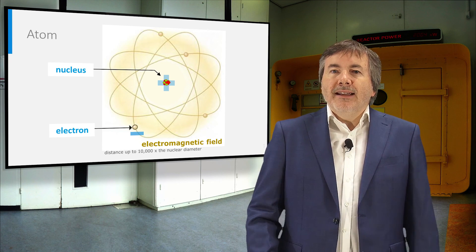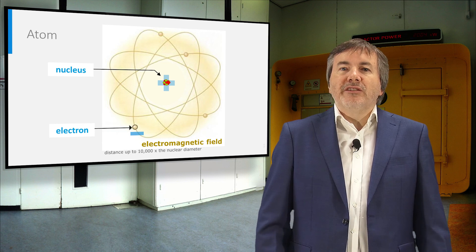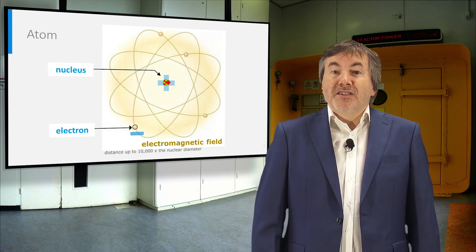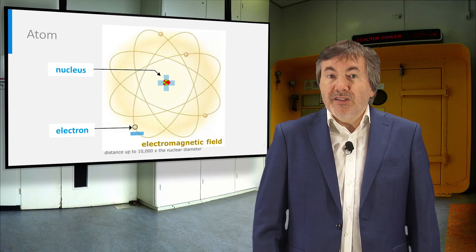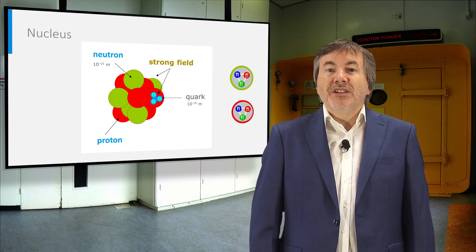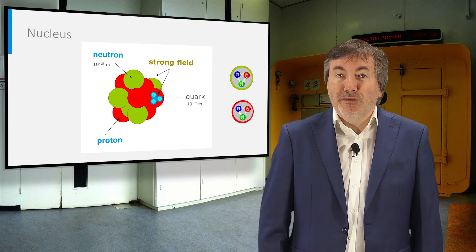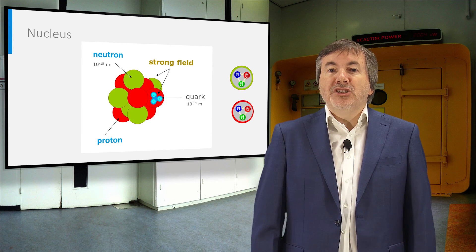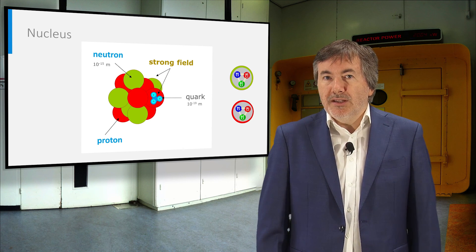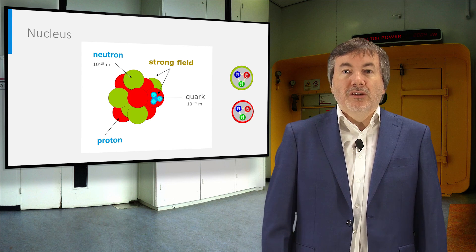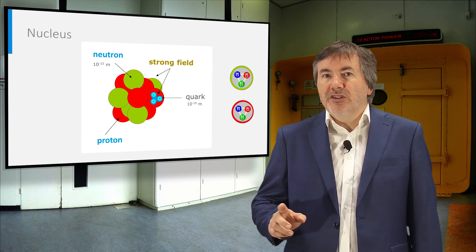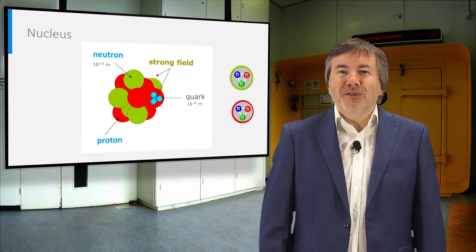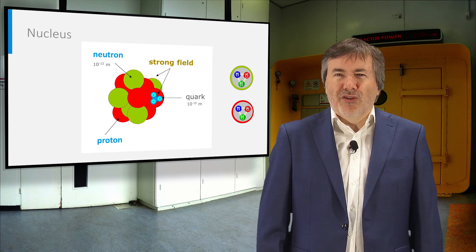The atom resembles the solar system. In the middle there is a heavy nucleus with a positive charge, and orbiting around it are small electrons with a negative charge. The electrons are arranged in orbitals defined by quantum mechanics. The size of the nucleus is in the femtometer range, which is 10,000 times smaller than the atom. The nucleus contains positively charged protons and uncharged neutrons, which both consist of quarks. The nucleons are held together at close range by the strong force.